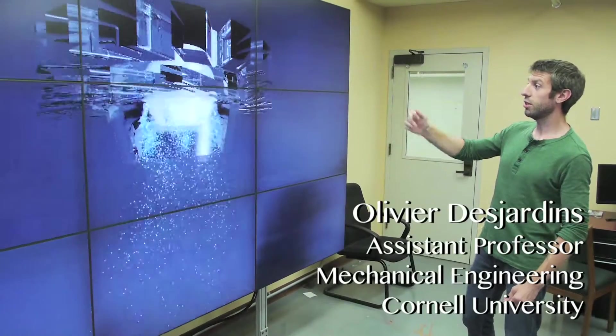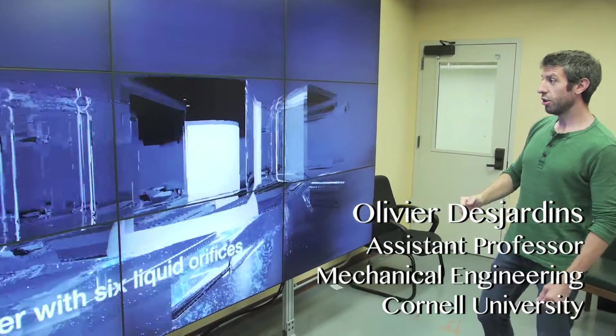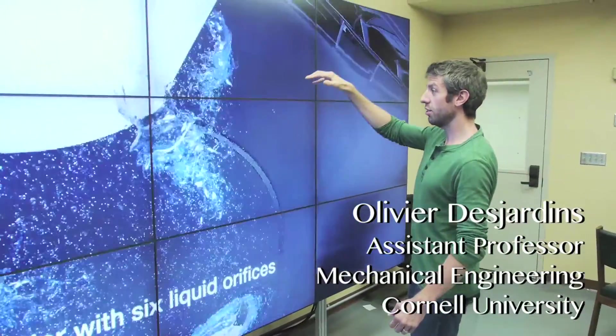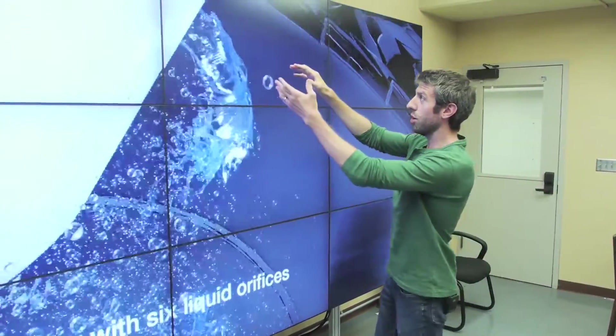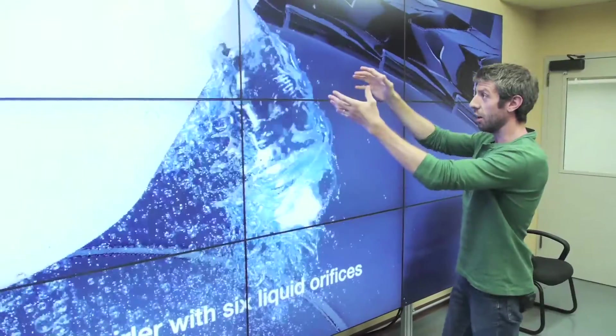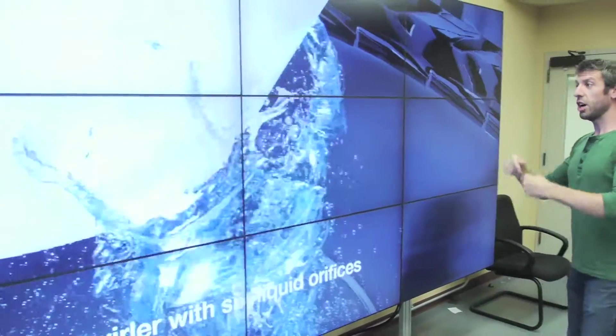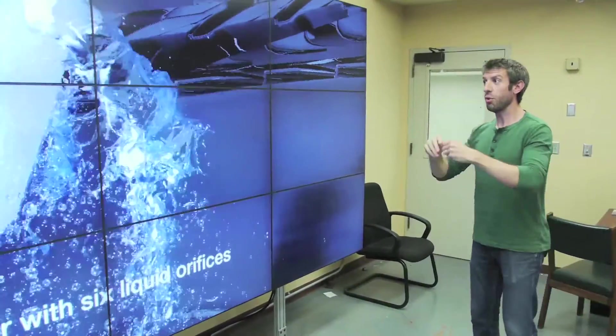The liquid fuel is being injected inside the gas turbine engine. So you can imagine here that air is flowing in and that we're adding to this air our liquid fuel, breaking it up into droplets, thereby forming a spray.